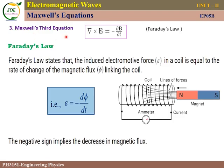Maxwell's third equation: ∇×E = -∂B/∂t. This comes from Faraday's law. Faraday's law states that the induced electromotive force in a coil is equal to the rate of change of magnetic flux. In an experiment, we take a coil wound on a cylindrical former.